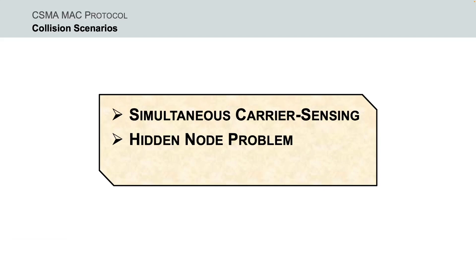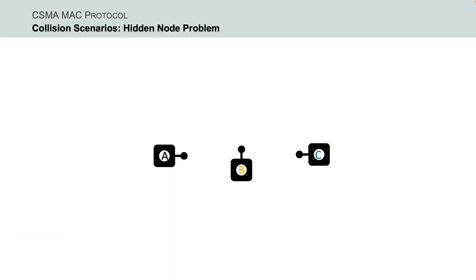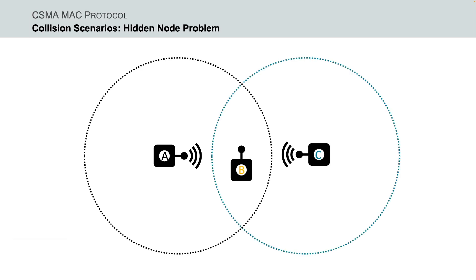Next, we have the hidden node problem scenario. Let's assume that there are three nodes, A, B and C, and each node comes with a propagation range that allows them to communicate only with their direct neighbors. More specifically, node A can communicate only with node B. Node C can also communicate only with node B, while node B may communicate both with nodes A and C. However, nodes A and C cannot communicate with each other as they are out of range. These nodes A and C are known as hidden nodes.